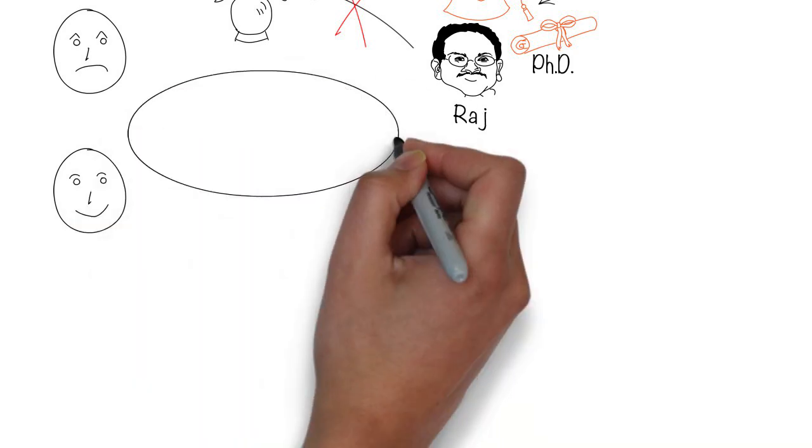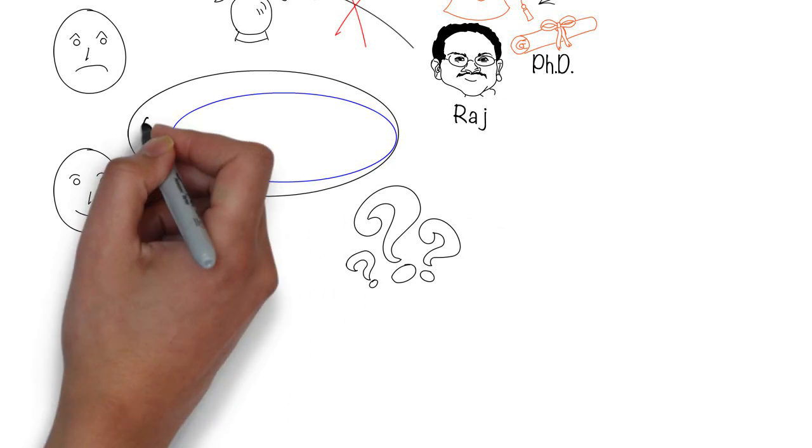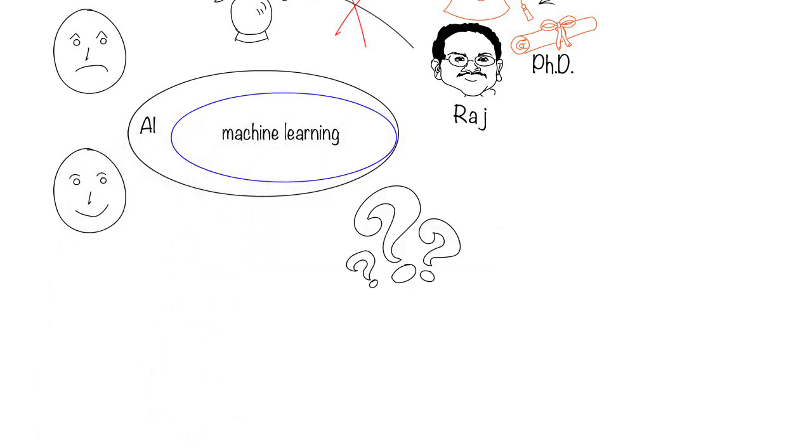In this short video, I'll talk about a branch of AI called machine learning. This covers a big portion of what you hear is AI.